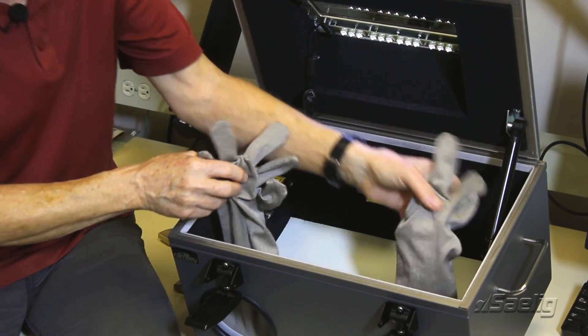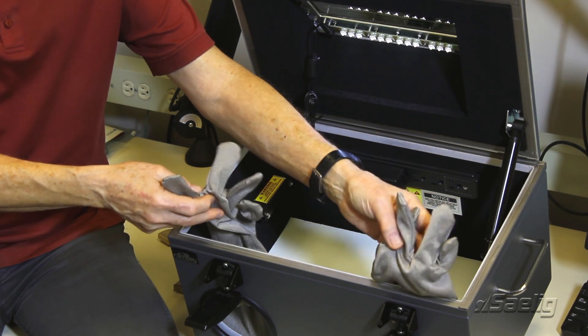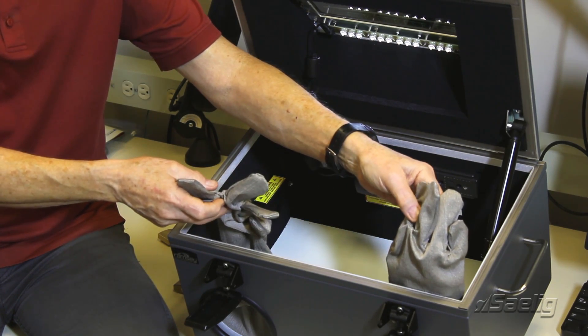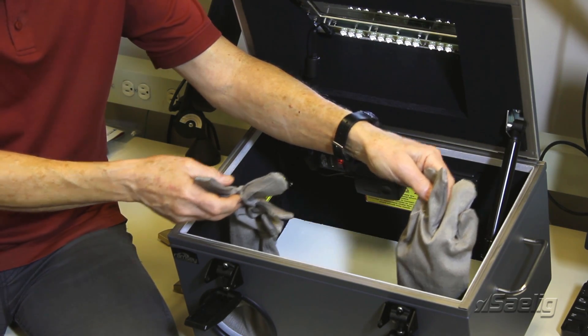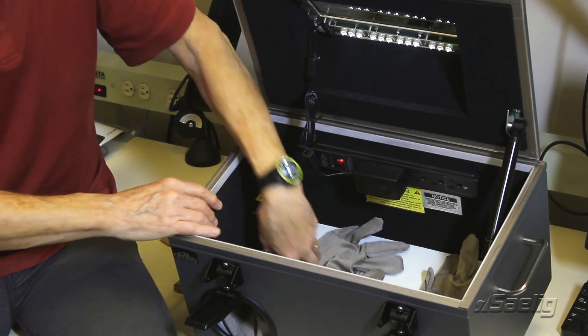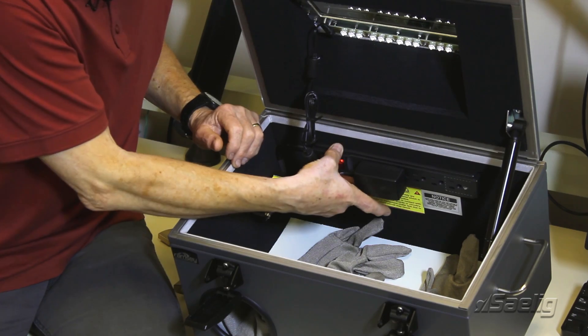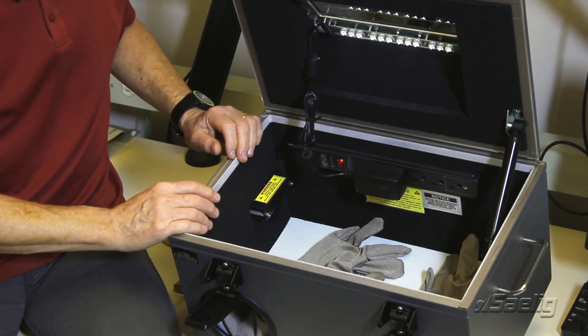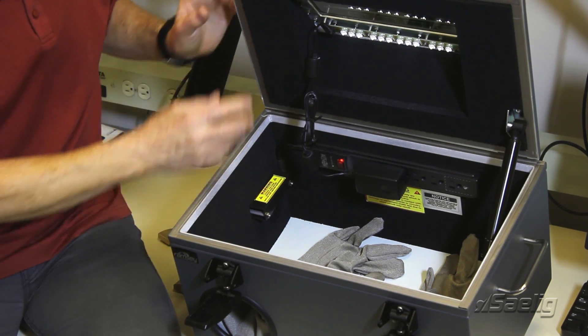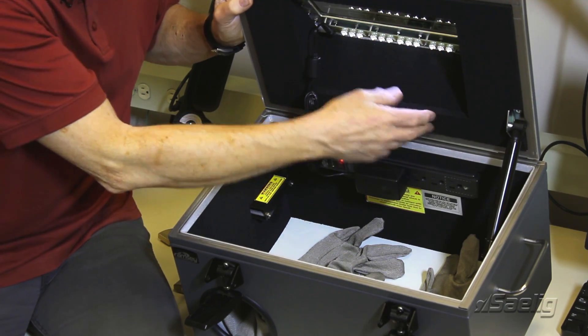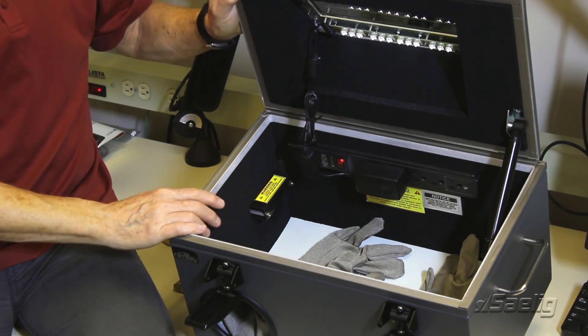Here's the pair of gloves that are made of the nickel silver thread fabric that provide RF isolation and we have filtered AC on the power strip and a very nice RF absorbent foam on all the sides inside this unit.